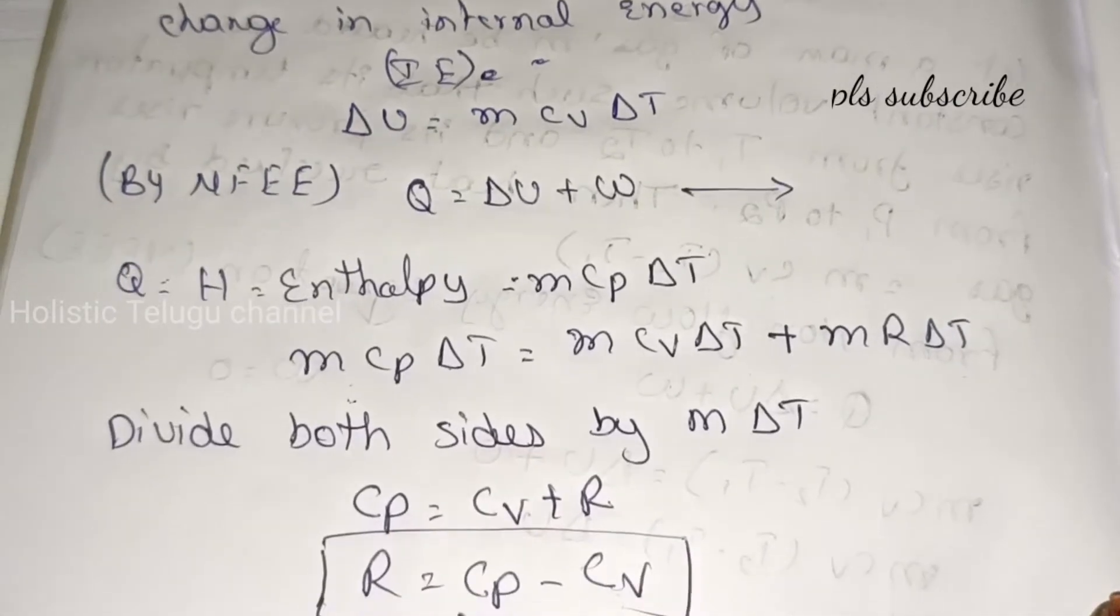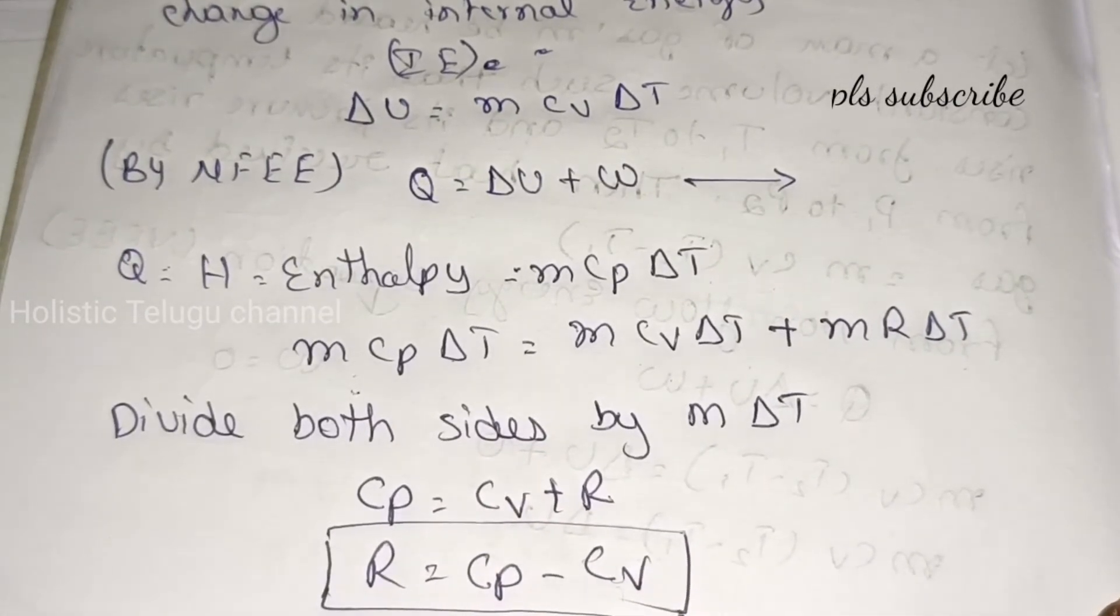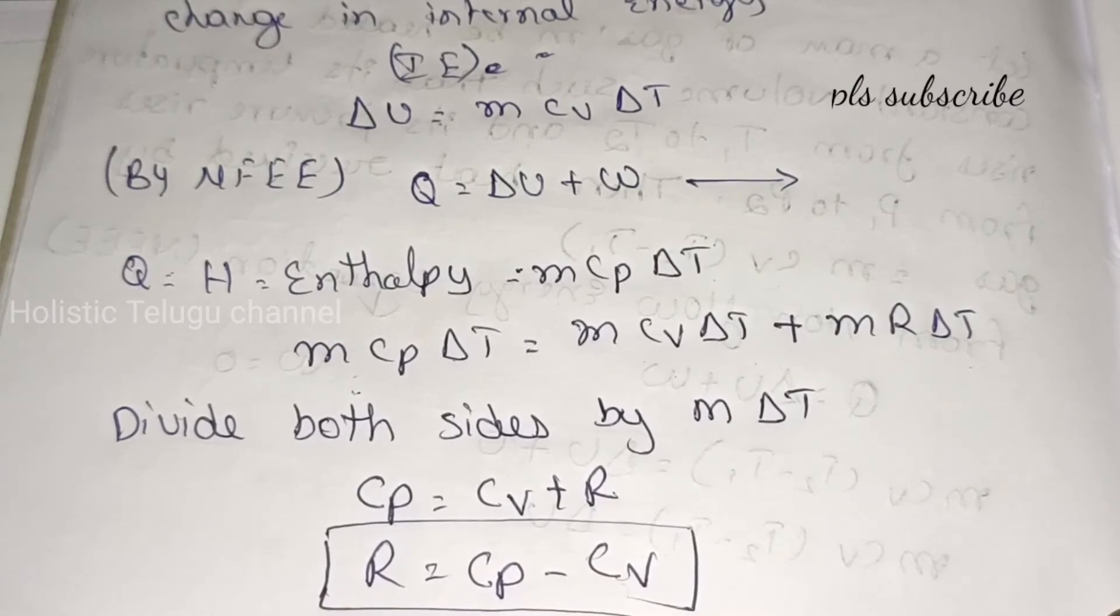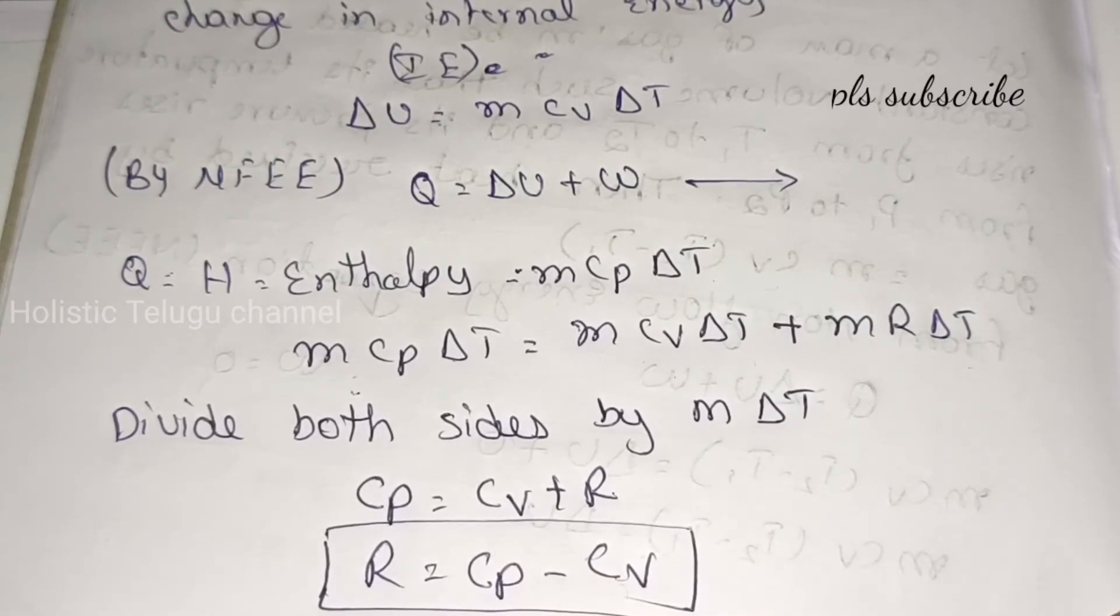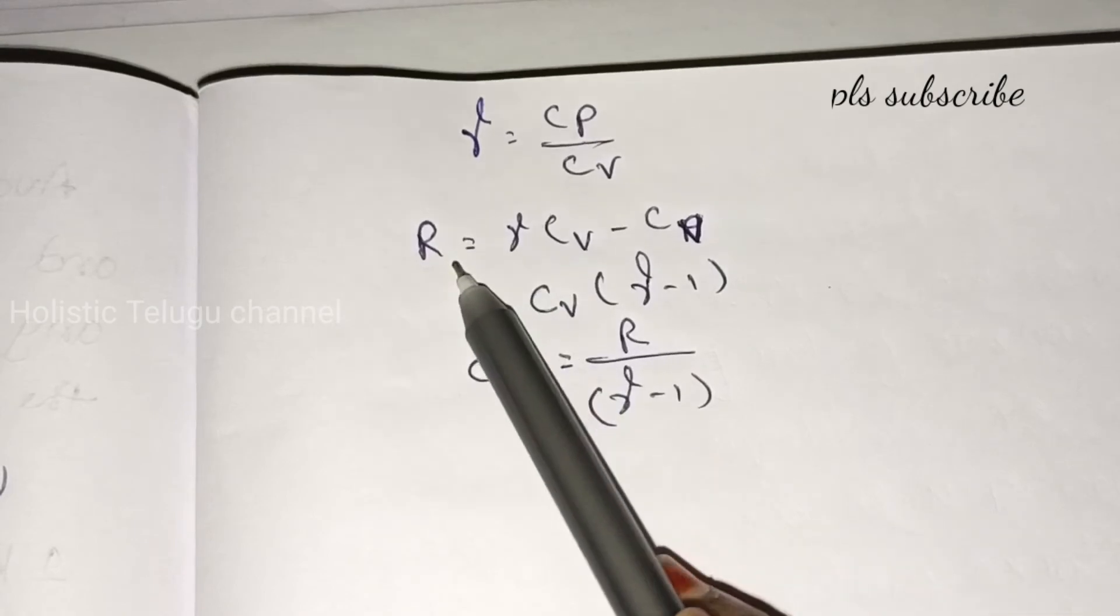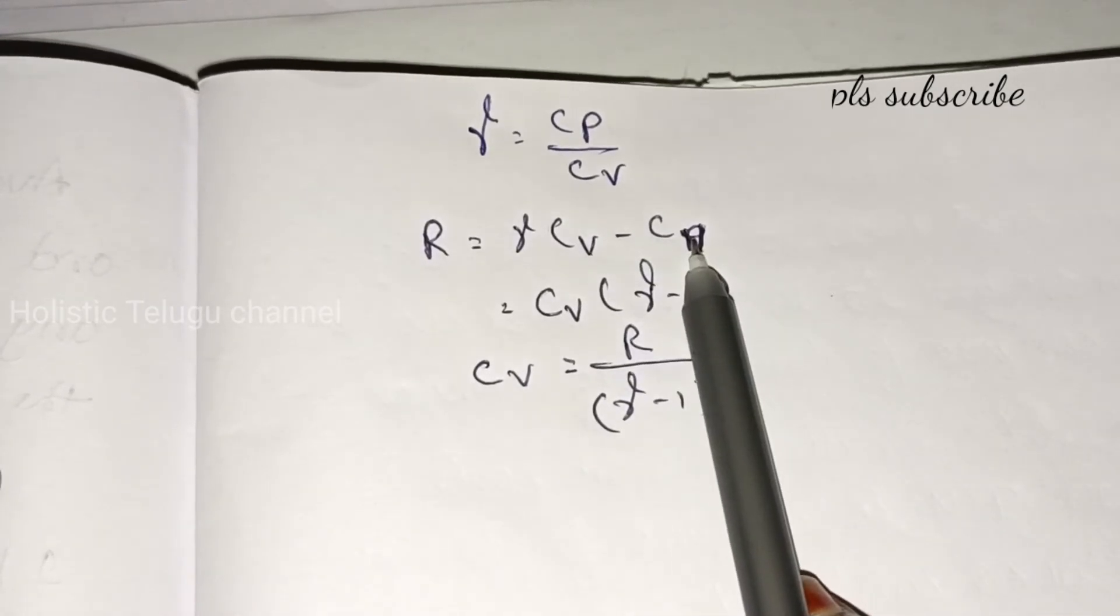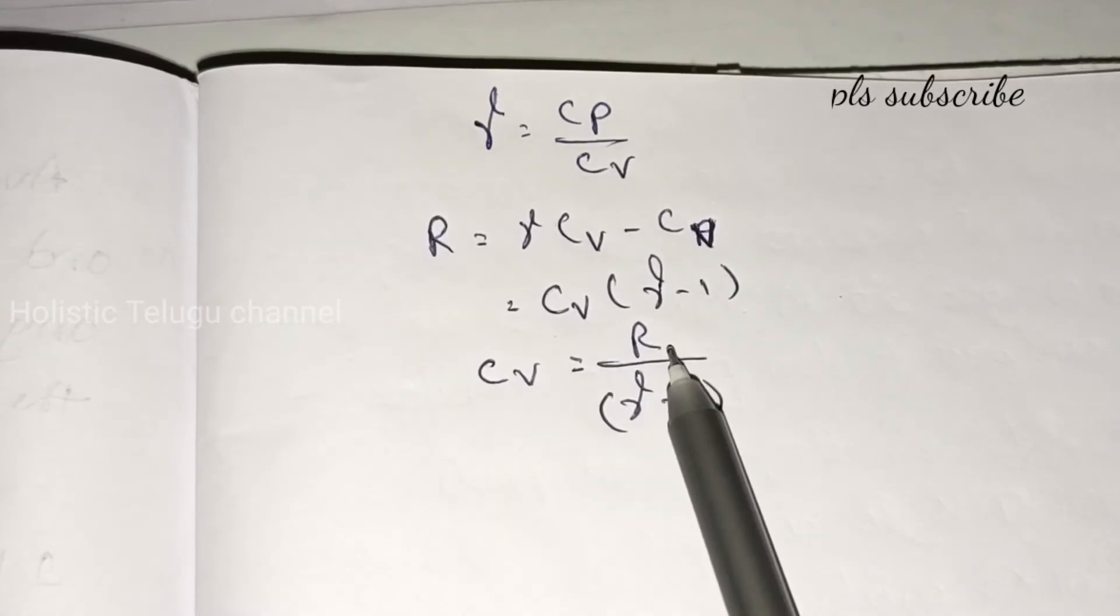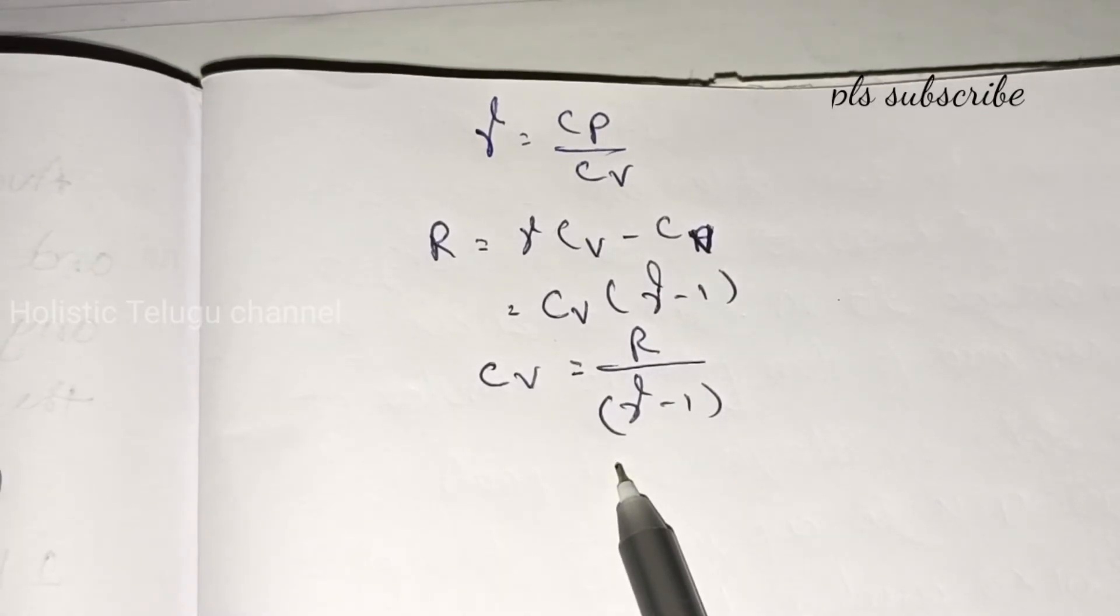We can write this as R equal to Cp minus Cv. For Cp and Cv there is another relation, the adiabatic index gamma equal to Cp by Cv. Using this, R equal to gamma Cv minus Cv. Taking Cv common, Cv (gamma minus 1), so Cv equal to R by (gamma minus 1).